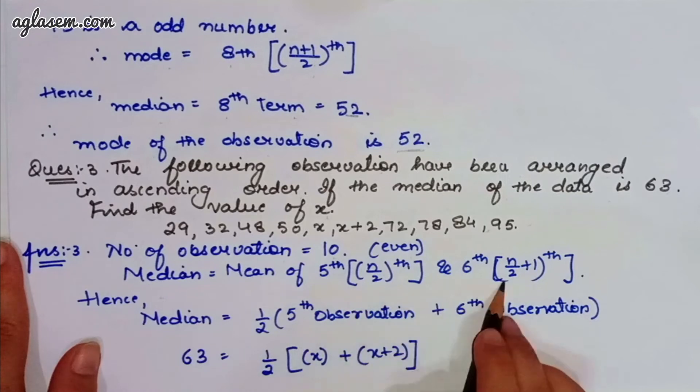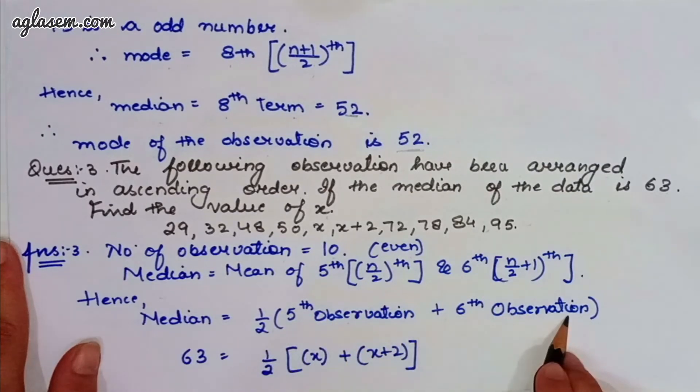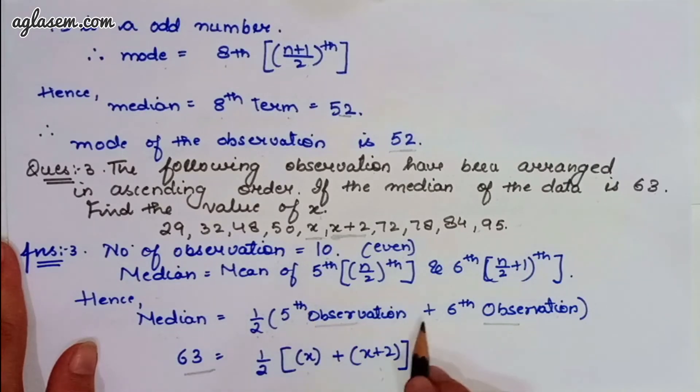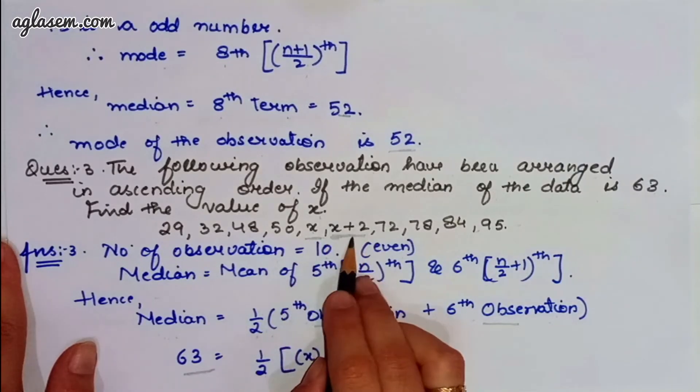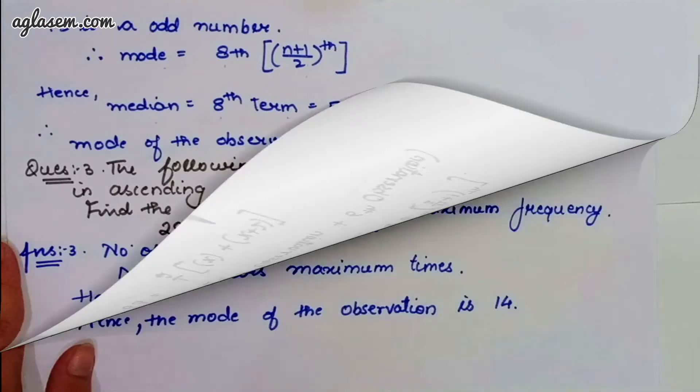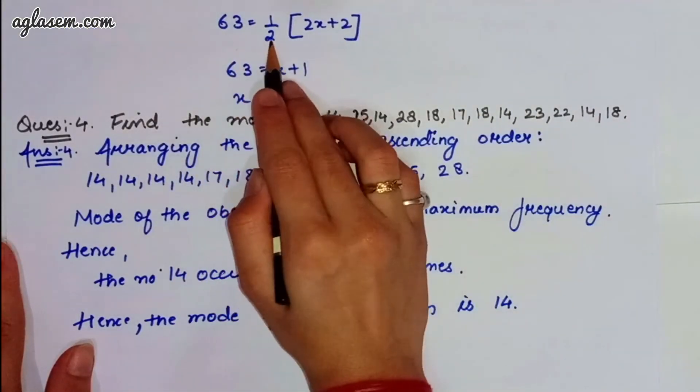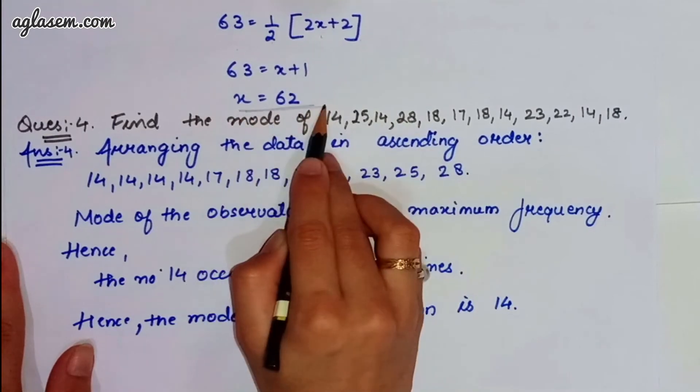Median, we can find it as the formula, half into 5th observation plus 6th observation. So, median we can find it as half, 5th observation plus 6th observation. Median, we have 63. And half, we can write it as half. 5th observation is x and 6th observation is x plus 2. So, 63 is equal to half, 2x plus 2 will give you x as 62.